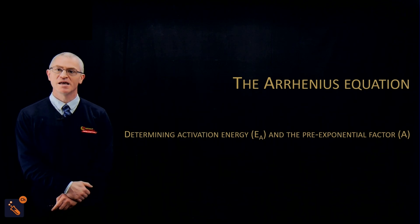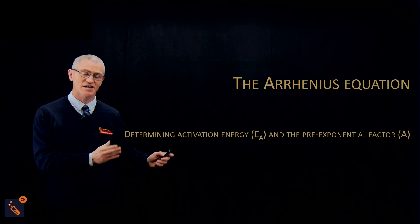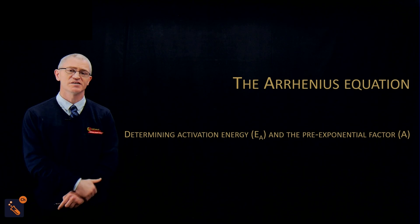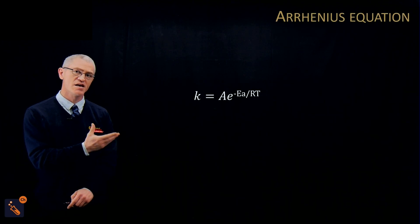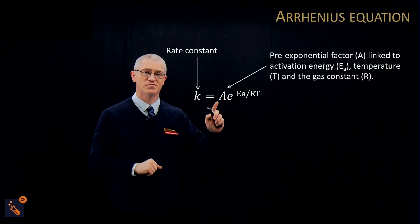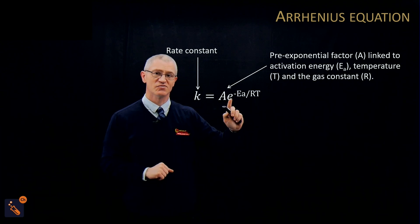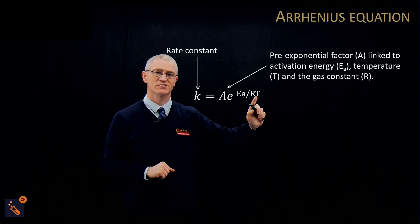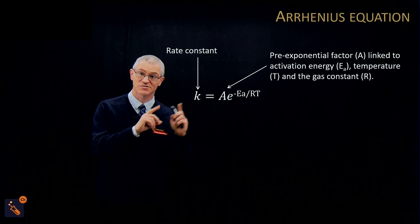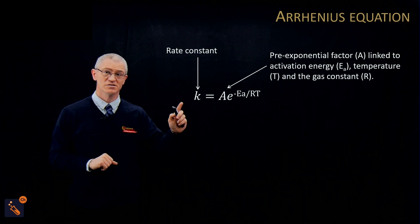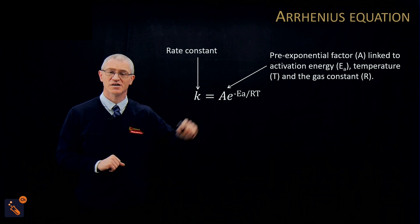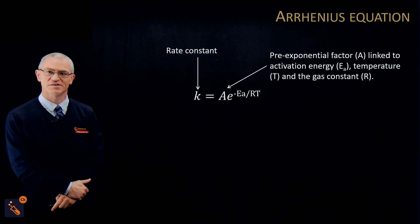In this video we're going to talk about the Arrhenius equation and determine the activation energy and the pre-exponential factor from a graph. This is a very common exam question. The Arrhenius equation has the rate constant, the pre-exponential factor, and that pre-exponential factor is related to the activation energy, the gas constant, and the temperature at which the reaction is happening — which is on the data sheet. You can be asked to calculate the pre-exponential factor and the activation energy from this graph.